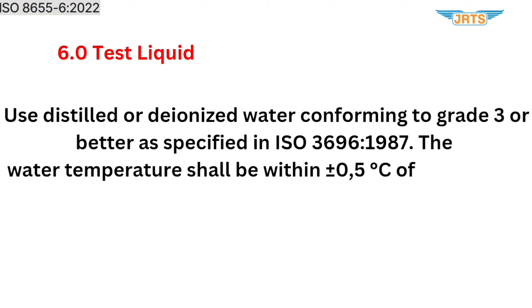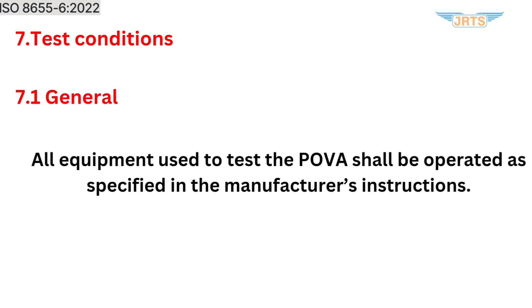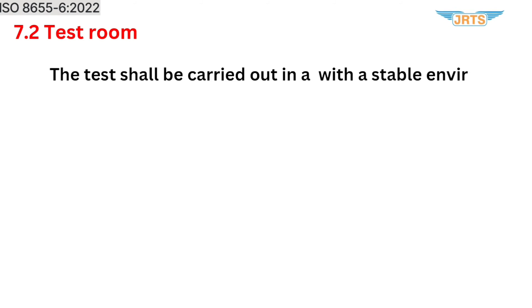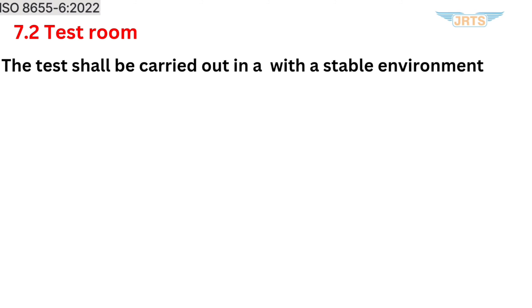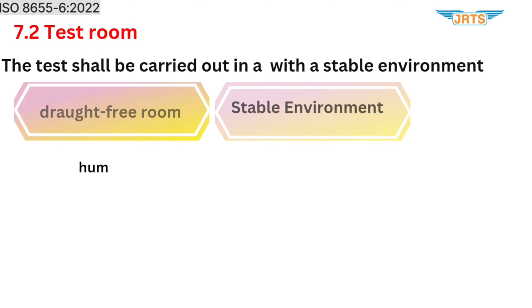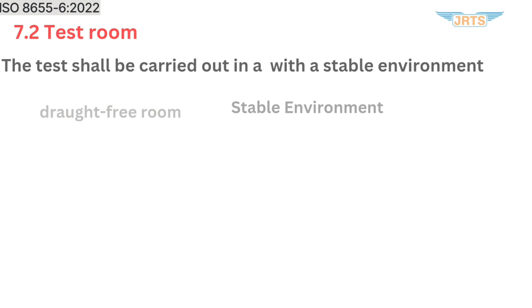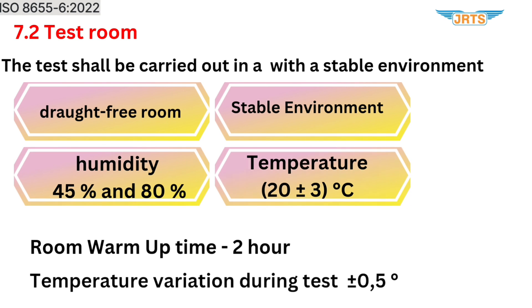The water temperature shall be within 0.5 degrees Celsius of ambient air temperature. Section 7, Test Conditions: All equipment used to test a POVA shall be operated as specified in the manufacturer's instructions. Section 7.2, Test Room: The test shall be carried out in a draft-free room with a stable environment — humidity between 45% and 80%, temperature 23°C, room warm-up time 2 hours, and temperature variation during the test within 0.5 degrees Celsius.